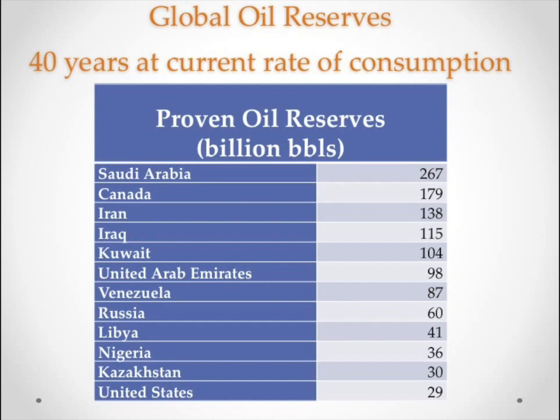The bottom line is there is a lot of oil out there — as well as a lot of natural gas and coal. At current consumption rates, there's probably about 40 years of oil remaining, and possibly more depending on technology. As the shale oil revolution demonstrated, new technologies can make previously inaccessible oil available. Conventional and unconventional oil together exist in Saudi Arabia, Canada, and other places around the world.